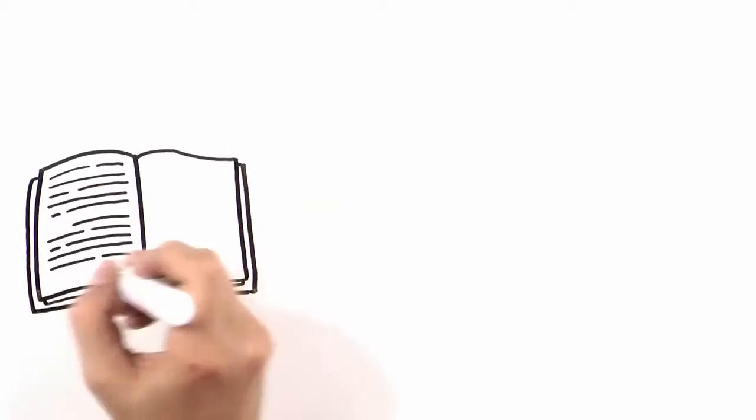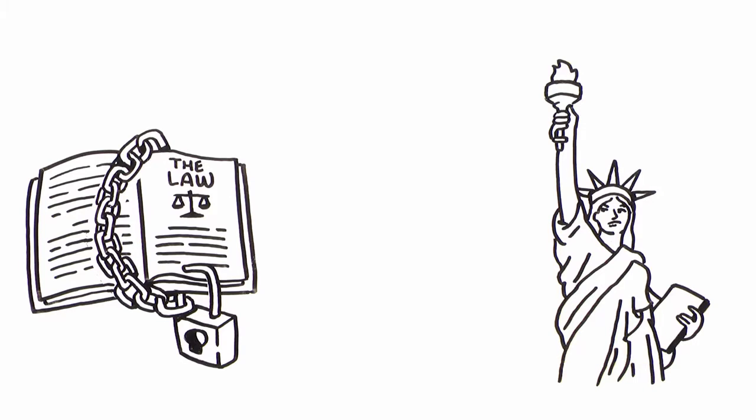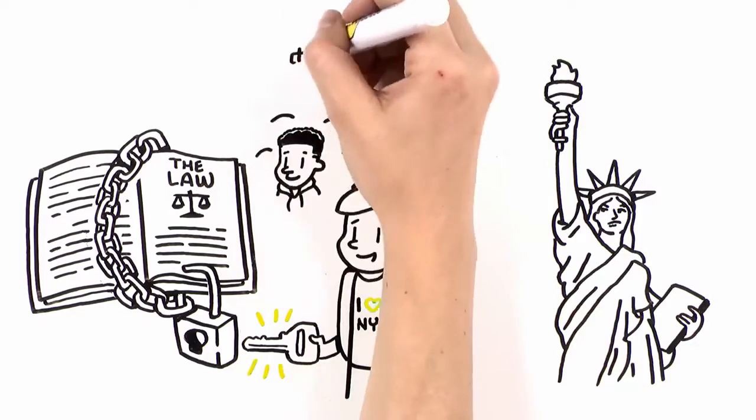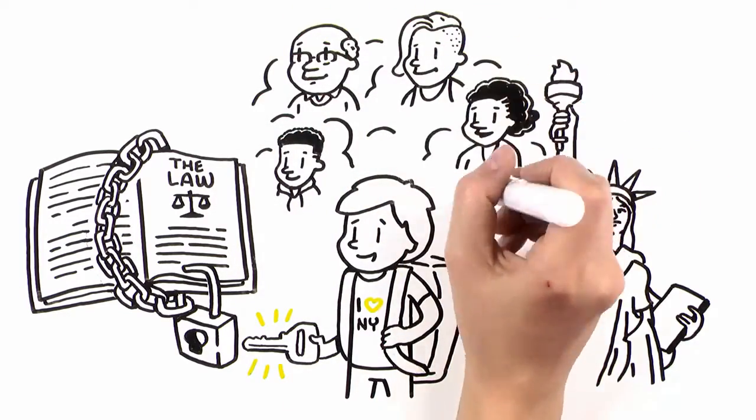New York used to have some of the most restrictive statute of limitation laws in the country. Now, the new CVA will expand the statute of limitations, and for one year only, it will lift the statute of limitations for all civil cases involving sexual abuse against children.